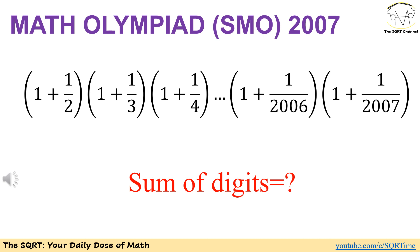In this problem we have an expression and we want to find the sum of the digits that we have in this expression. The expression has multiple terms and each term is going to be a multiplicative term. For the first one we have 1 plus 1 over 2, then we have 1 plus 1 over 3, and so on so forth until 1 plus 1 over 2007.